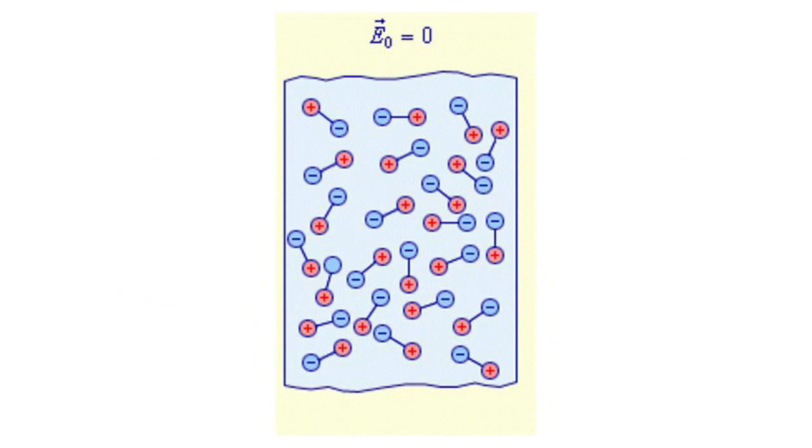Polar dielectrics consist of molecules in which the positive and negative charge distribution centers do not coincide. The polar molecules can be roughly viewed as electric dipoles — that is, the aggregate of two opposite polar charges that are equal in magnitude and located at a certain distance from each other.